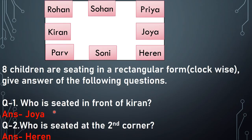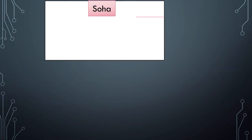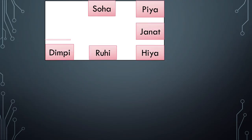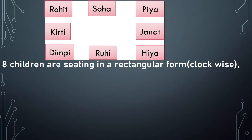So like this you have to give the answers of these questions. Arrangement can be given in any form — it may be rectangular, square, triangle, or clockwise, anti-clockwise, circular, horizontal, or vertical form, and even parallel lines also. So here we have done. Now let us take your homework, and your homework is — arrangement would be this one, and similarly 8 children are sitting in a rectangular form, clockwise. Give answer of the following questions.